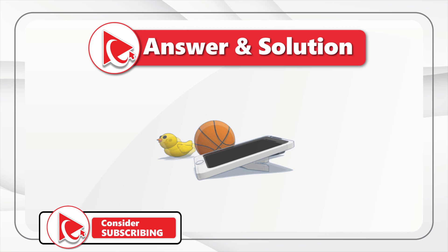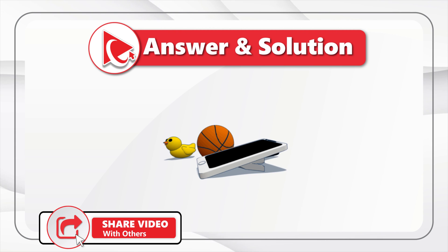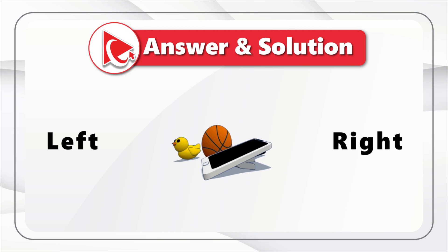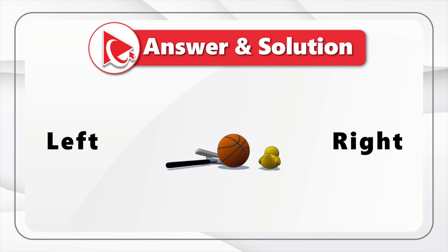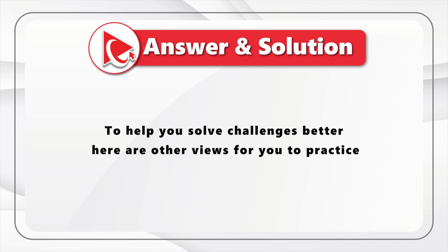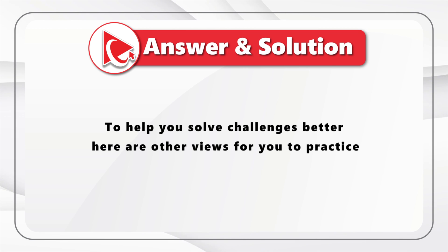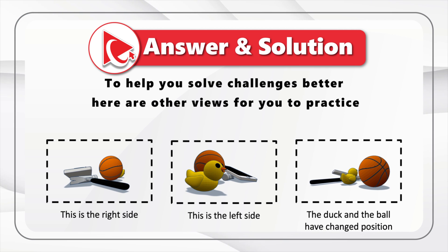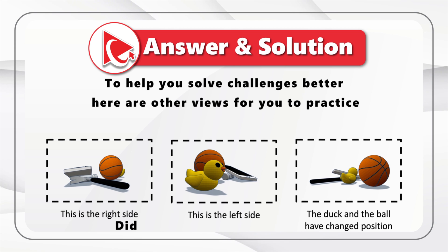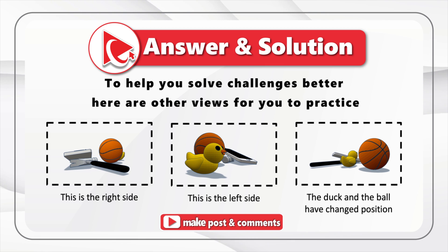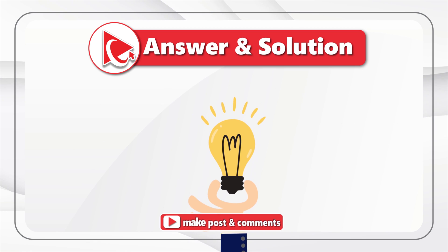So let's go back to the duck. If you look at the original image, the duck is looking to the left and is on the left side of the ball. Which means that if we look from the opposite side, the duck will be looking to the right and would be on the right side of the ball. We frequently see these types of questions on the test. Here are the views of these objects from different sides — from the right, from the left — and a view when the duck and ball have changed position.